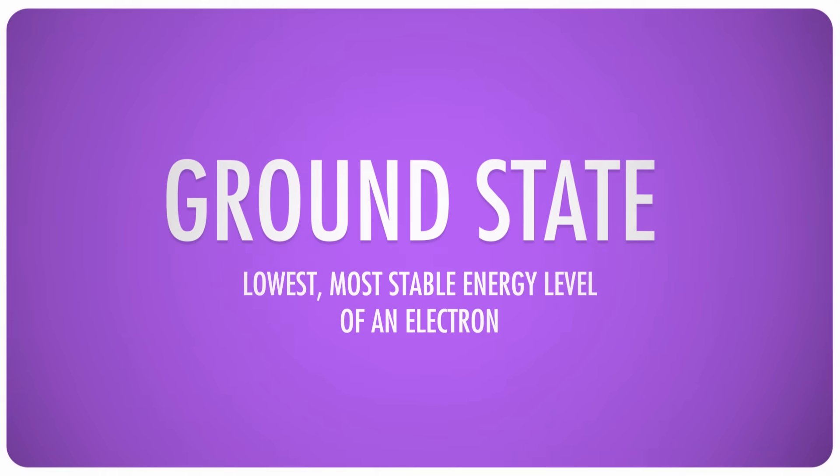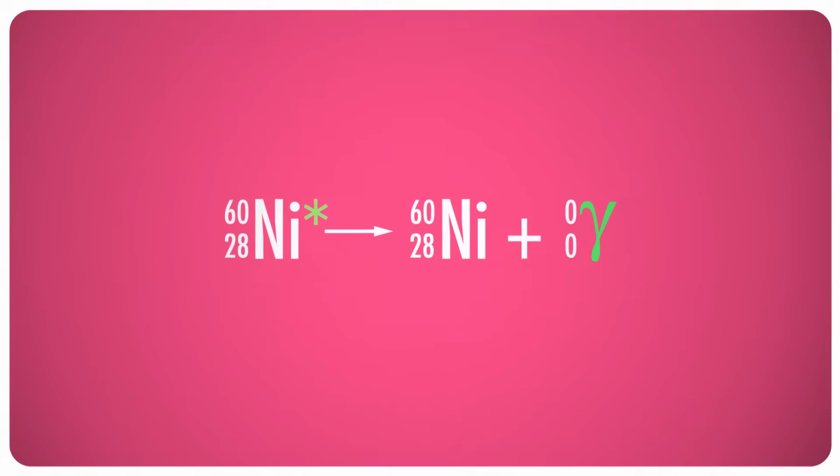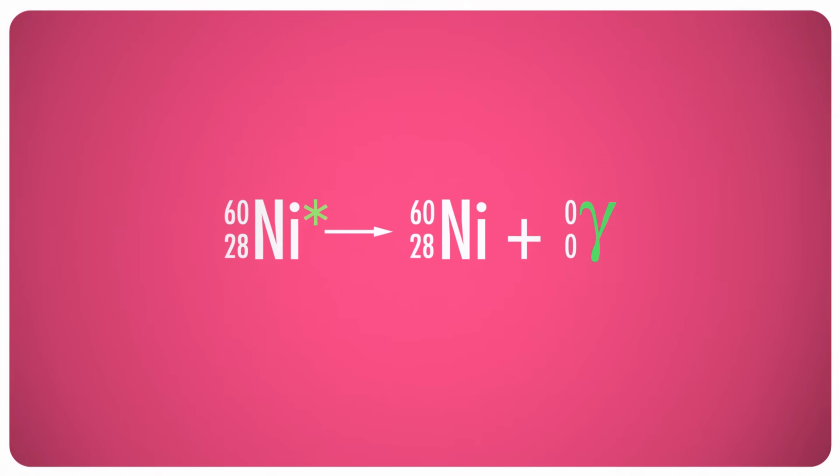Depending on how much energy the electron loses, the extra energy can be released in the form of visible or ultraviolet light, X-rays, or gamma waves. Let's take the example of nickel-60.